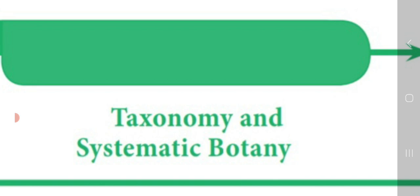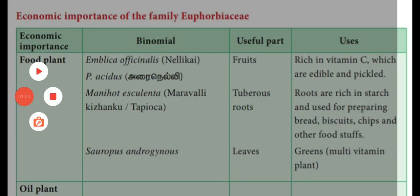Good morning students. This is Levan Chandler Botany video class, Video 6. In this video, we are going to continue the lesson Angiospermic Families. Last video class, we have seen general characteristic features of Euphorbiaceae, botanical description of Ricinus communis, floral diagram, and floral formula. Now, we are going to see economic importance of Euphorbiaceae family, general characteristic features of family Musaceae, and also economic importance of family Musaceae in this video.